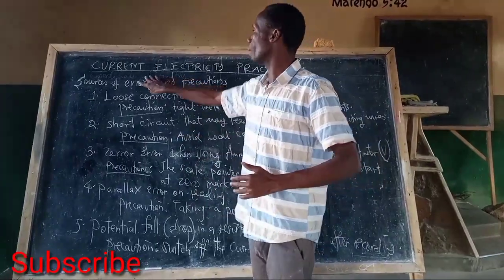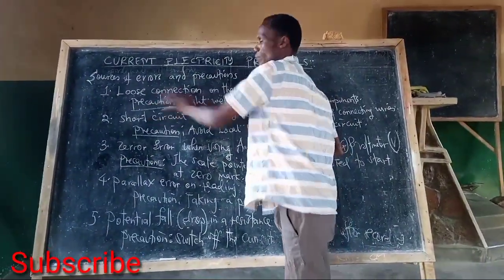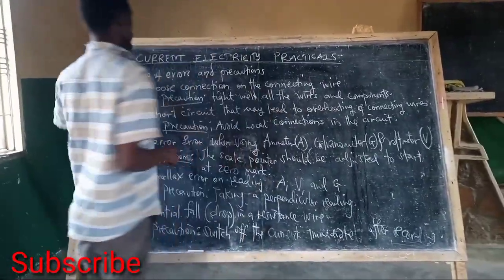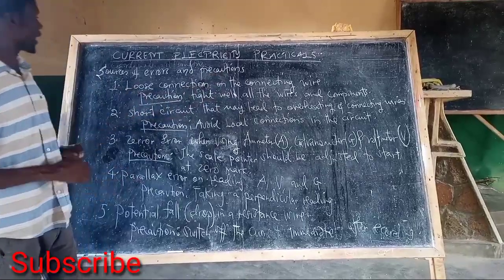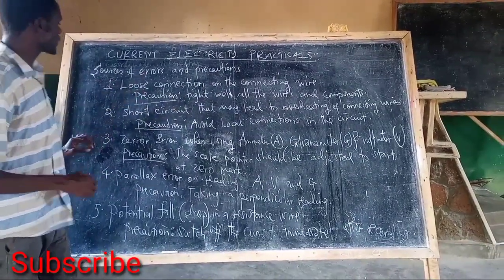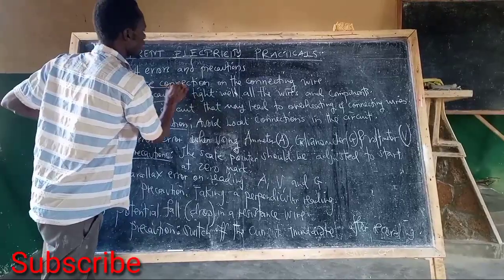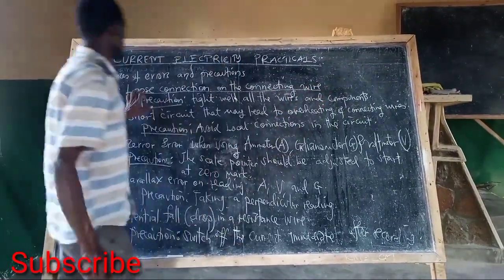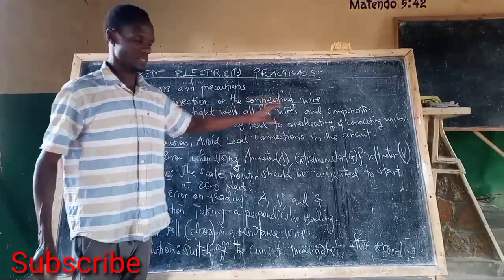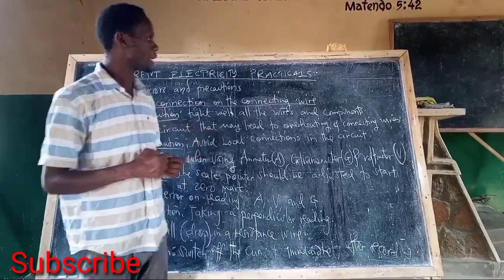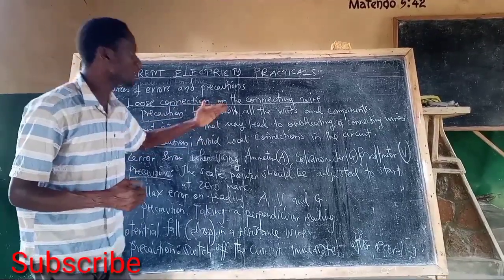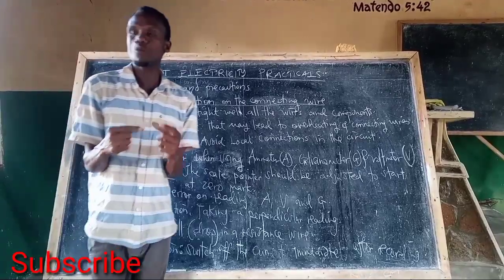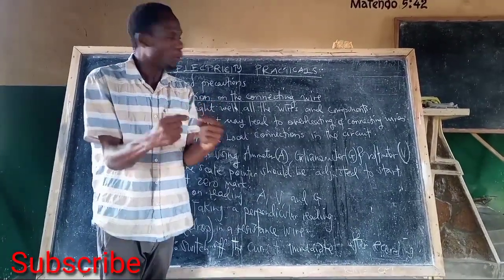You may avoid errors and take precautions when you are conducting the experiment. One of the errors - that is what we call the sources of errors and precautions. One of the errors is what we call loose connection on the connecting wires. To avoid this one, you have to make sure that wires are tightly connected at every point.